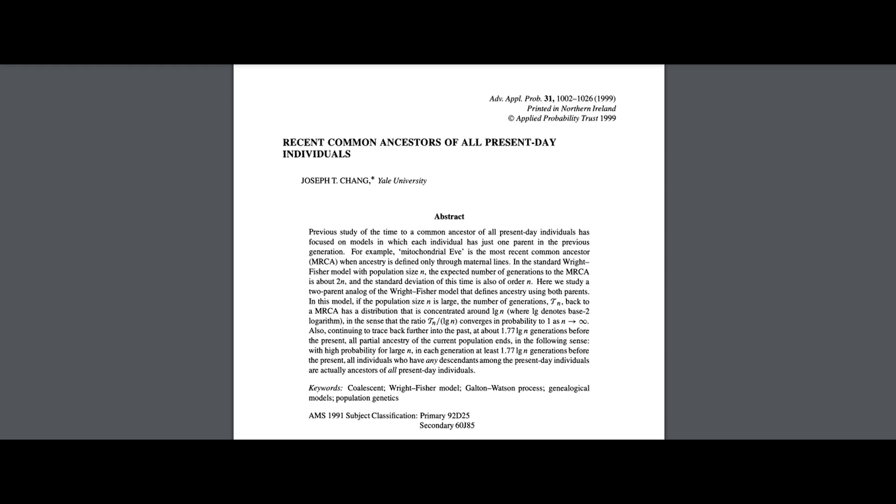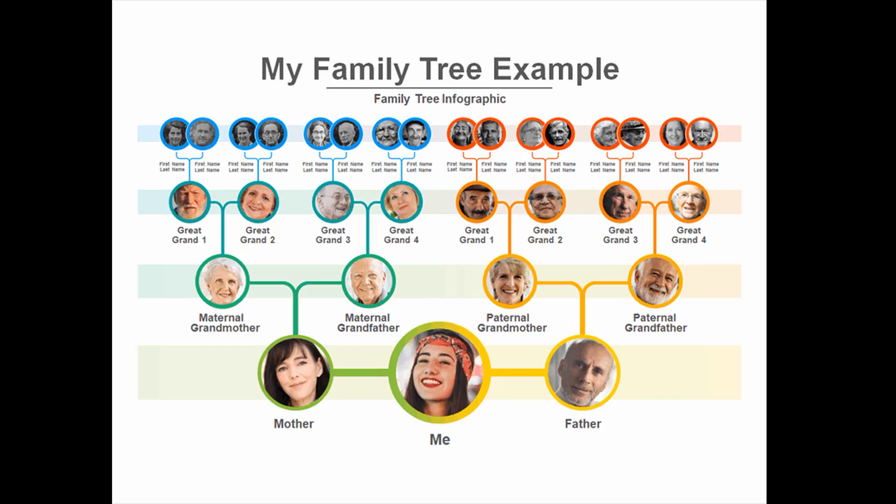If we take the calculations of population geneticist Joseph Chang outlined in the 1999 paper, 'Recent Common Ancestors of All Present Day Individuals,' then we find that the most recent common ancestor of those 5,000 Tasmanians lived only 12 generations ago. Given that a single century can see three or more generations within a lineage, that means the common ancestor of all Tasmanians lived at most four centuries ago, in 1400 AD. That seems surprisingly recent, but it makes sense if you think about it.